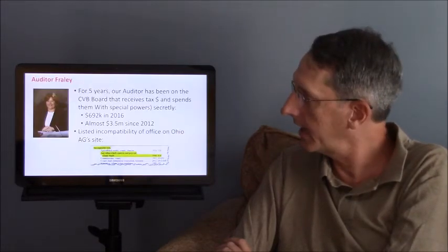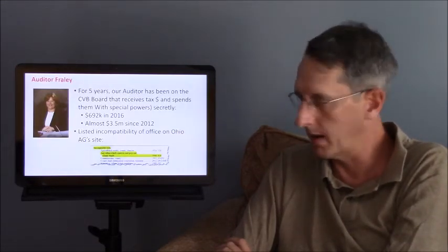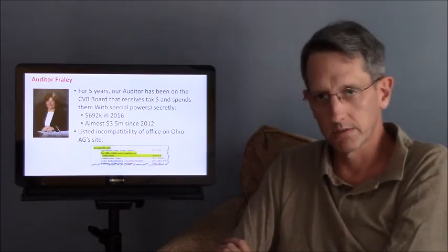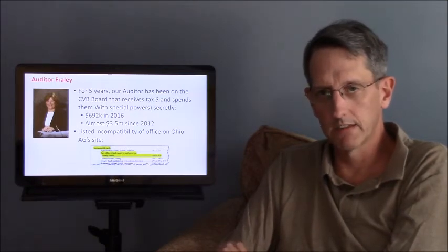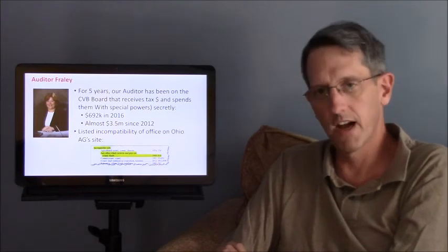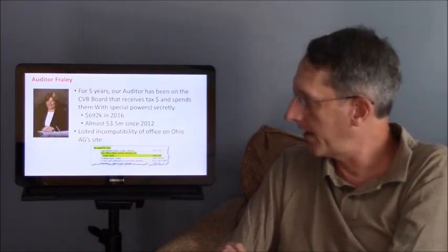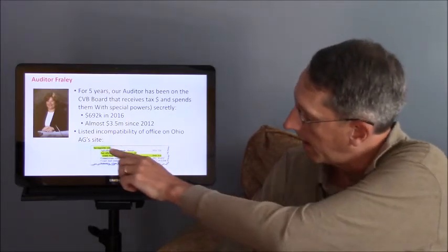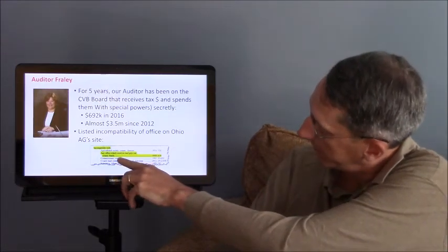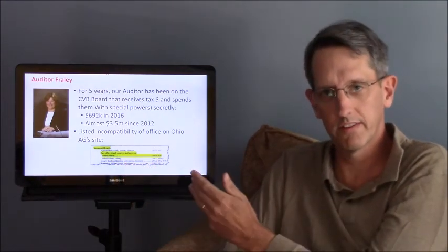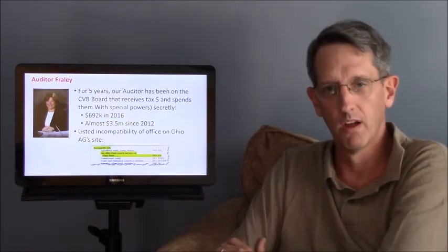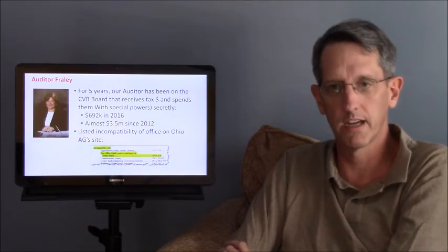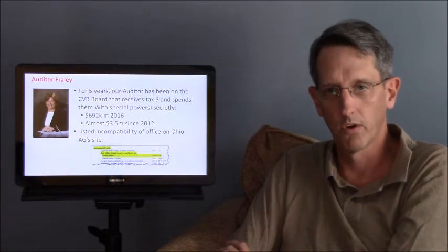All right. So it's also important to remember that our auditor, Linda Fraley, has been on this board for five years. They get about $700,000 a year from her office. That's about $3.5 million of tax revenue since 2012. It's a listed incompatibility of office on the Ohio AG site for the auditor in a county to be in any office that receives or pays out county funds. This is like unbelievable to me. It's unbelievable. And it's been exposed for weeks and weeks now. And I guess they're not used to in Claremont County, somebody actually asking questions about blatant conflicts of interest. So it goes on and on.